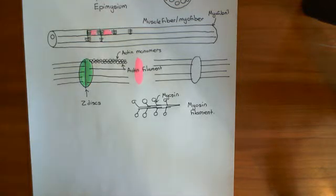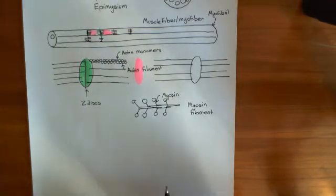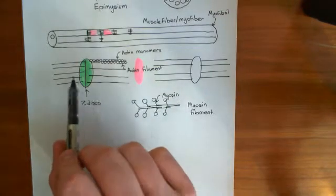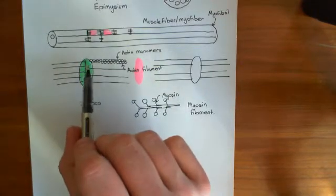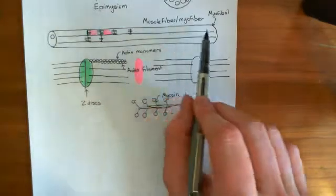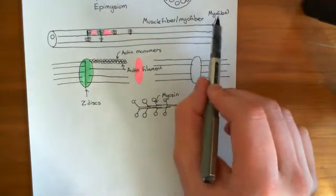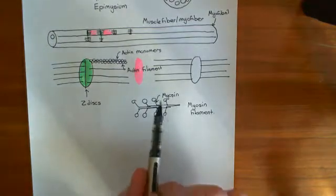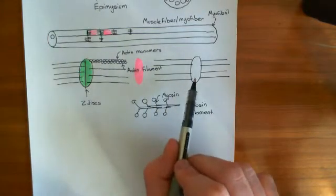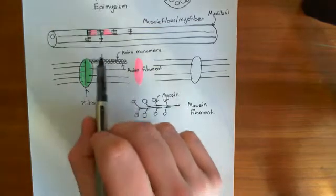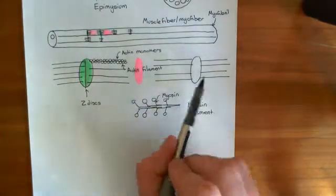Welcome to this next video on skeletal muscle contraction. At the moment, we are discussing the structure of a sarcomere. So far, we've discussed these Z-discs, which are going to line up in lines within the muscle fibre to form myofibrils. Now we're discussing what's actually going to contract them and bring them closer together, because at the moment all we've got is this line of Z-discs.